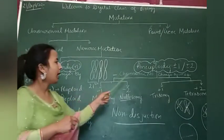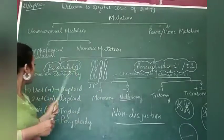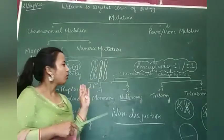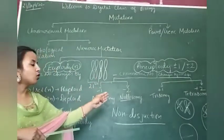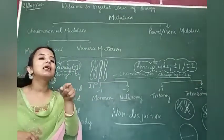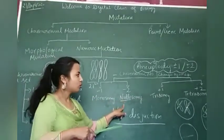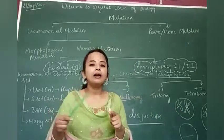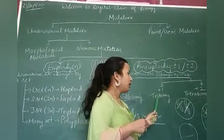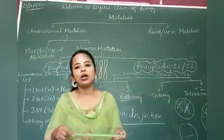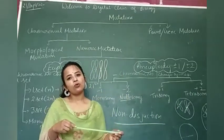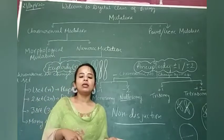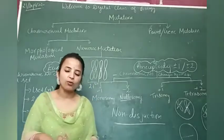I hope you have understood about numeric mutation. It is of two types: euploidy and aneuploidy. In case of aneuploidy, we studied about monosomy and nullisomy when the chromosome number decreases either by one or by two. And in case of trisomy and tetrasomy, when chromosome numbers are added, either by one known as trisomy, or by two known as tetrasomy. I hope you have understood. If there is any inquiry, please feel free to ask. Thank you and have a wonderful day.